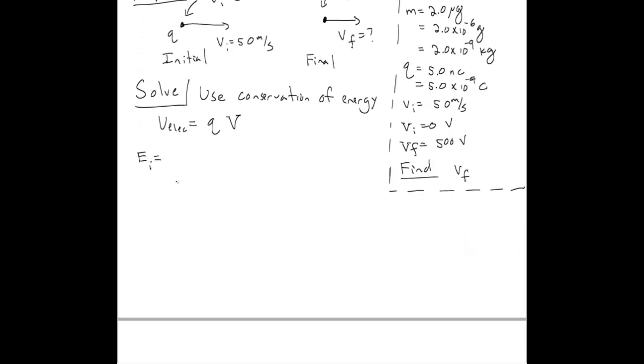The initial energy is the potential energy and kinetic energy initially, which we write as Q times the initial potential plus one-half m v-initial squared. The final energy is the same with final subscripts: Q times the final potential plus one-half m Vf squared. Conservation of energy tells us that the initial energy equals the final energy.